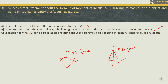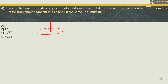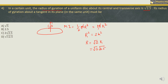In a certain unit, the radius of gyration of a uniform disc about its central and transverse axis is root of 2.5. Its radius of gyration about a tangent in its plane must be found. For a uniform disc, moment of inertia about this axis is half mr squared, and using the formula mk squared we can cancel m. Since k equals root 2.5, we get r squared equals 2k squared, so r equals root 2 into root 2.5 which is root of 5.